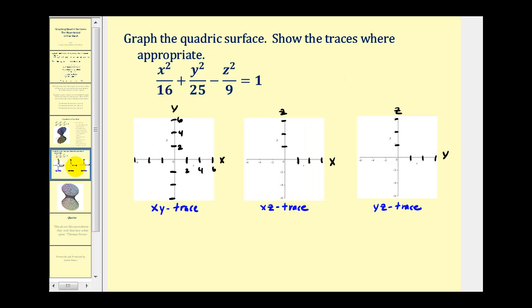Let's take a look at an example. Here we should notice right away that this does fit the form for a hyperboloid. Now let's take a look at the traces. To determine the xy trace, we'll set z equal to zero.